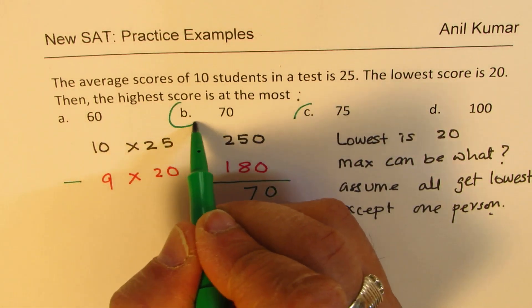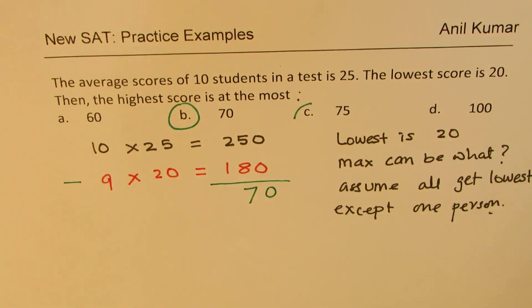So that gives you 70 as your answer. So C, sorry, B is the right option, correct? 70. So that is how you could easily answer this question.